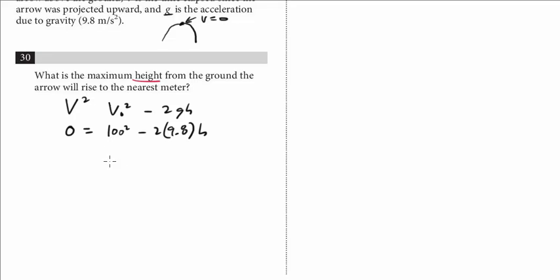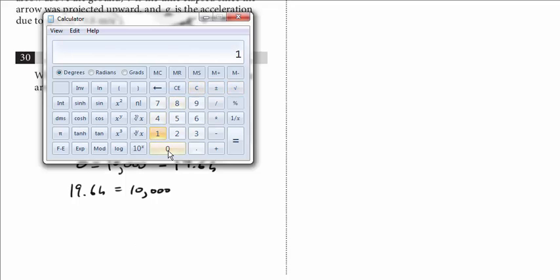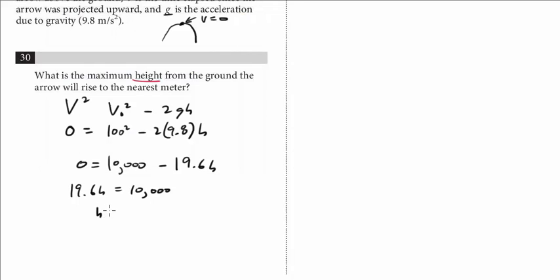So here, 100 squared is 10,000, and then we have minus, so 9.8 times 2 is going to be 19.6h equals zero. And so we're going to bring this to the left side, so we get 19.6h equals 10,000. Obviously, it's the calculator permitted section, and so we have 10,000 divided by 19.6, and we get h looks like 510.2. And the question is asking to the nearest meter, so we round down. And the answer is 510.